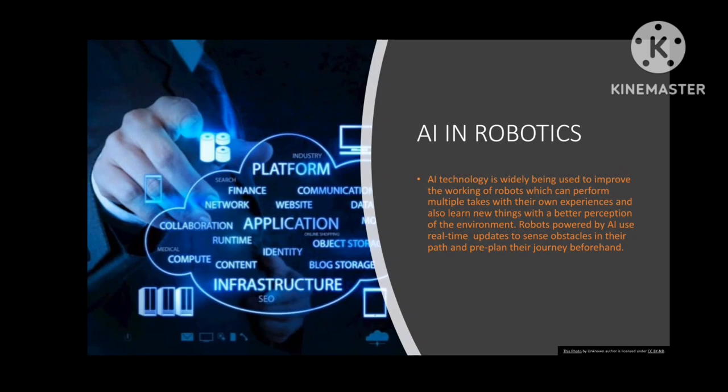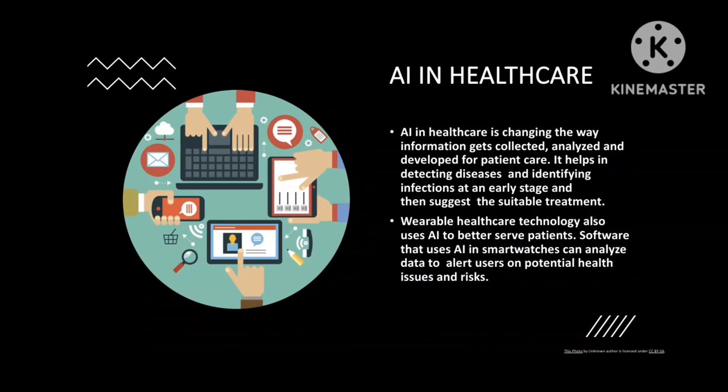The next application is AI in robotics. AI technology is widely used to improve the working of robots, which can perform multiple tasks from their own experience and also learn new things with better preparation through evolution. Robots use AI with real-time updates to sense obstacles in their path and pre-plan their journey ahead.